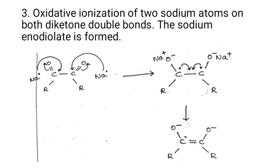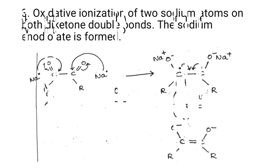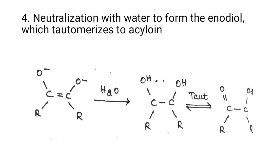When trimethylsilyl chloride is used, it traps the oxygen and breaks the silicon-oxygen bond, forming the 1,2-diol. On further tautomerization, it forms the acyloin. Thank you.